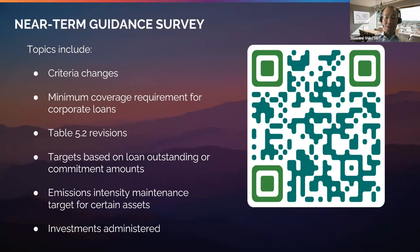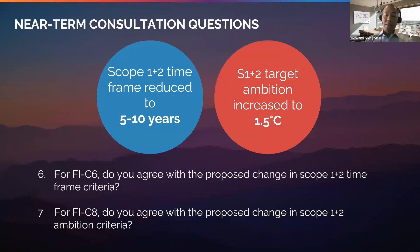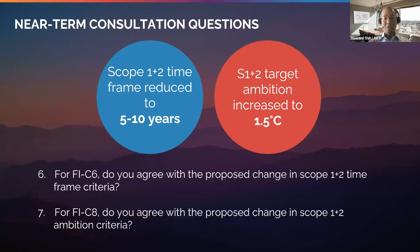You can access the survey through scanning the QR code provided on this slide. In the consultation survey, the first two content questions ask if you agree with the following two criteria changes. First, we are proposing a shortening in the time frame of scope 1 and 2 targets from 5 to 15 years to 5 to 10 years to bring it in line with the corporate net zero standard. The second proposed change is to increase the minimum ambition of scope 1 and 2 targets from well below 2°C to 1.5°C, again to bring it in line with the corporate criteria.